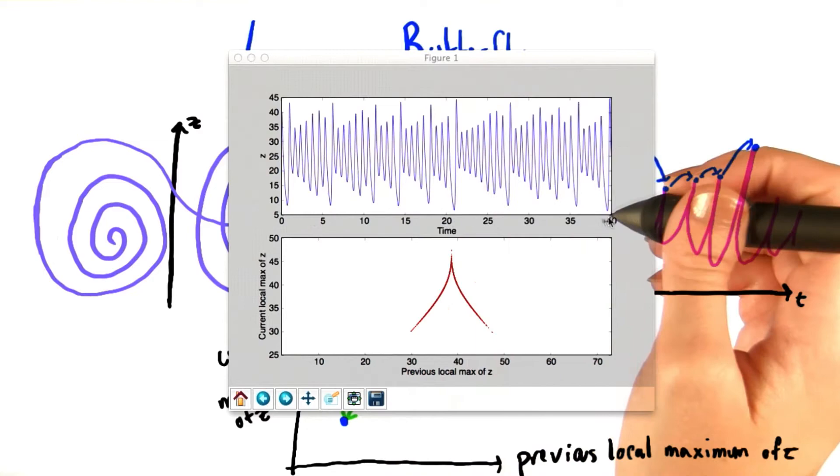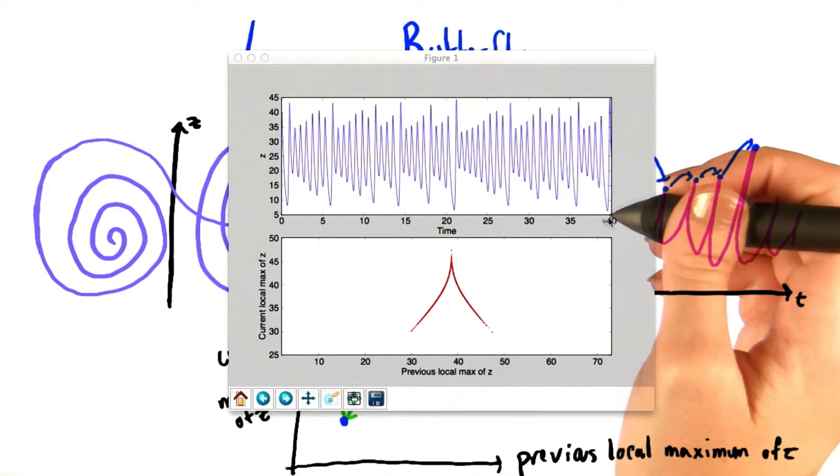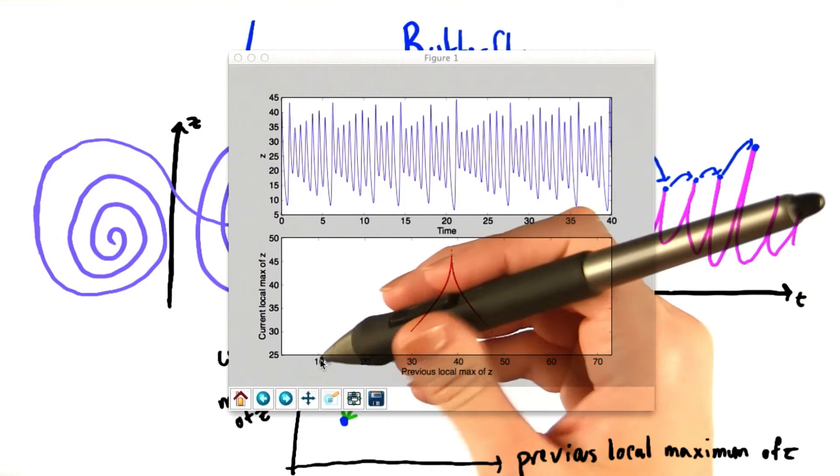Up here, we can see how the peaks in z vary with time. Clearly, these zigzags are a little bit more accurate than mine were. And down here, we see how the present local maximum depends on the previous local maximum. So you'll know that you've gotten the problem right if something like this appears.